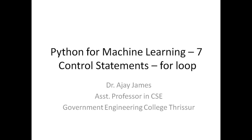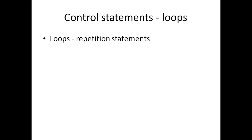Hello all. In this lecture we'll see about control changes. In the previous programs we have already seen certain instructions that will be repeated in a sequence. We have seen different sequences of operations. Next, if we want to repeat some statements in a program, we need some other control statements. In this lecture we'll see about for loops. Loops are actually repetition statements — they can be used to repeat certain number of statements.